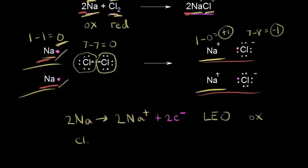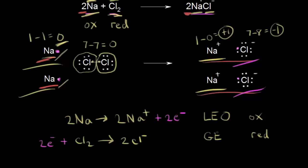Now we write the reduction half reaction. The chlorine molecule gained those two electrons in magenta, and that turned the chlorine atoms into chloride anions, giving two chloride anions on the right. The two electrons are added on the reactant side — that is a gain of electrons. LEO the lion says GER: gain of electrons is reduction.